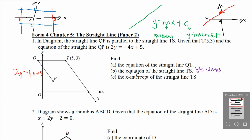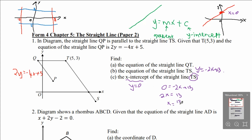Part C: find the X-intercept of the straight line TS. X-intercept is when Y equals to 0, and Y-intercept is when X equals to 0. For TS, from part B the equation is Y equals to negative 2X plus 13. To find the X-intercept, let Y equals to 0: 0 equals to negative 2X plus 13, so 2X equals to 13, and X equals to 13 over 2. This is the X-intercept of TS.